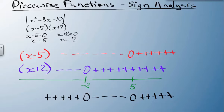So now, we know that from negative infinity to negative 2, it's positive. From negative 2 to 5, it's negative. And from 5 up to positive infinity, it's going to be positive.